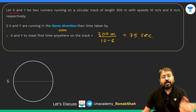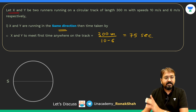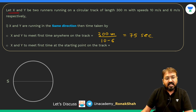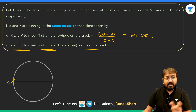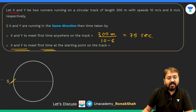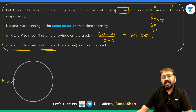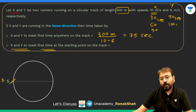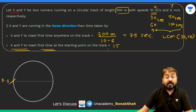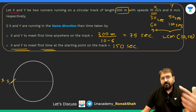We'll also understand where they meet and how many meeting points there are. The second question: when will X and Y meet for the first time at the starting point? Speed of X is 10 m/s, so X returns to the start every 30 seconds. Speed of Y is 6 m/s, so Y returns every 50 seconds. Both meet at the starting point at the LCM of 30 and 50, which is 150 seconds.